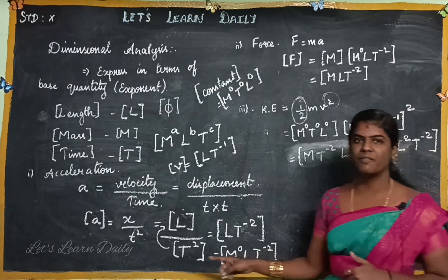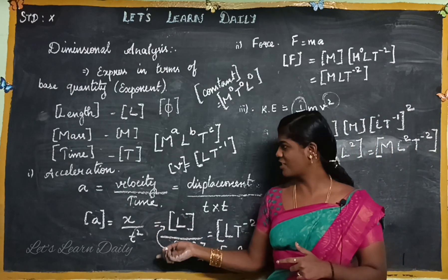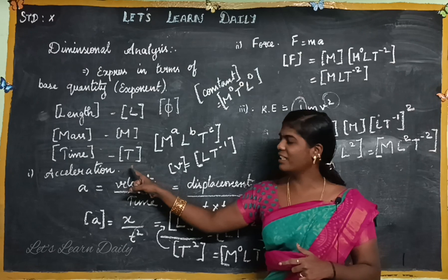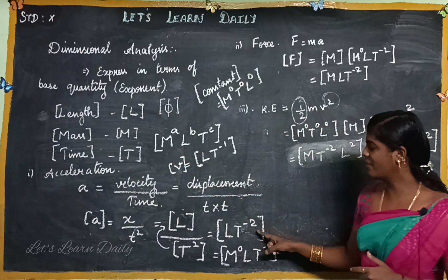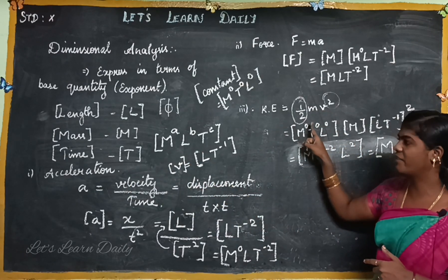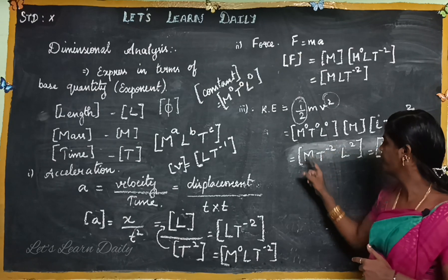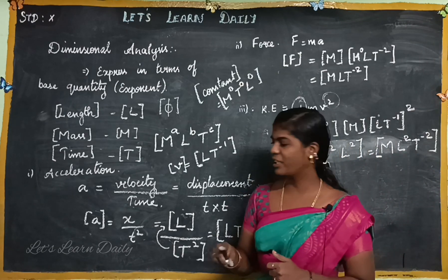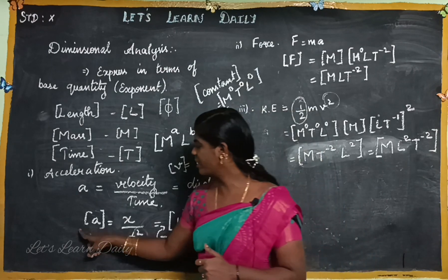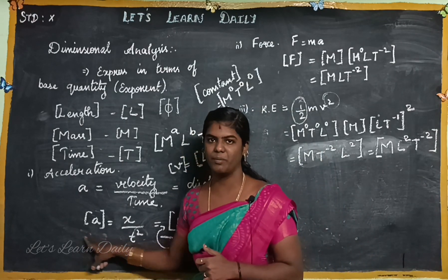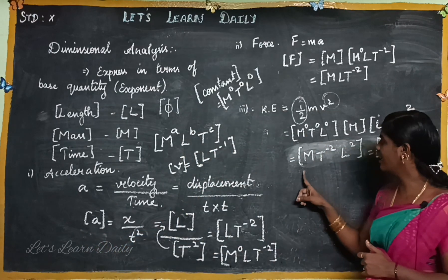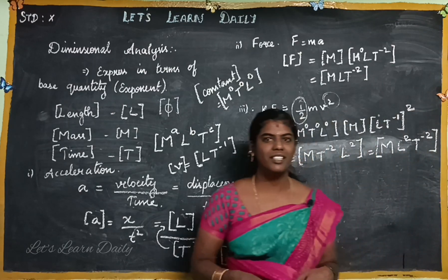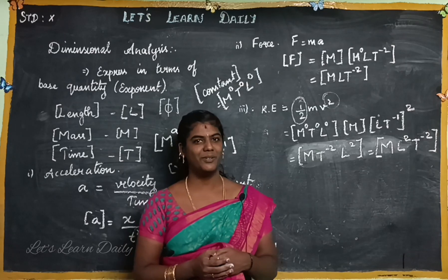So if you put constants aside, you can find the dimension. You can convert physical quantities to derived quantities by expressing them in terms of fundamental dimensions and finding their power values. Put square brackets around physical quantities to get the final dimension. Thank you.